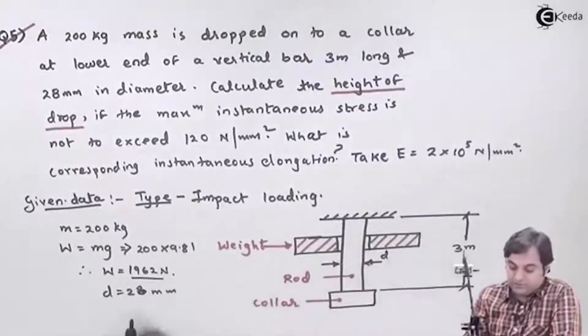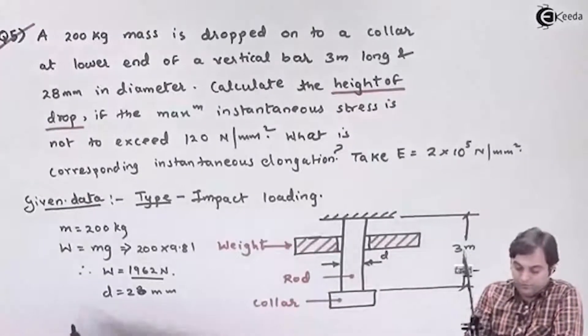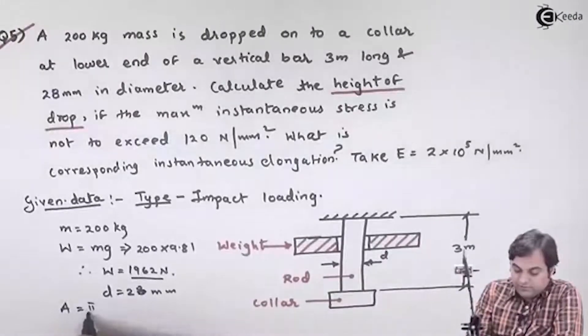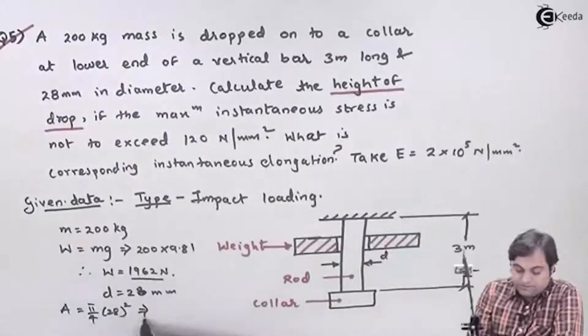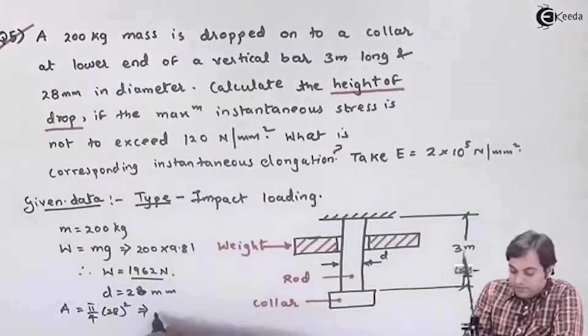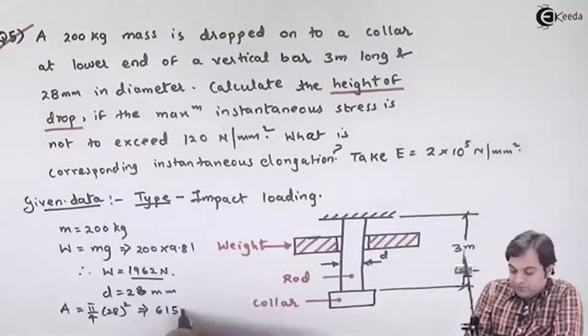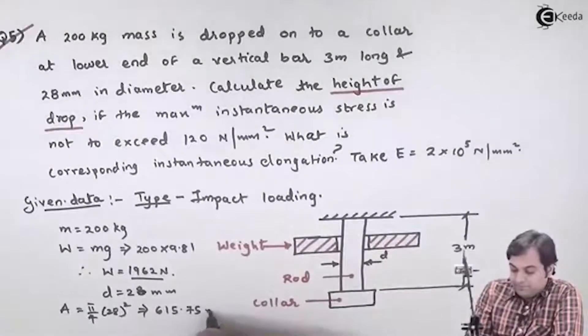From this we get the area of the rod: A = π/4 × 28² = 615.75 mm².